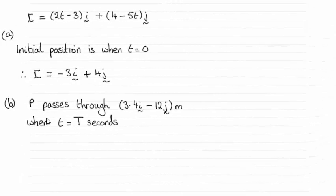Hi there. Now for part B then, we had to find the value of T when the particle P passed through this point, 3.4i minus 12j. And the answer turns out to be that T is 3.2.